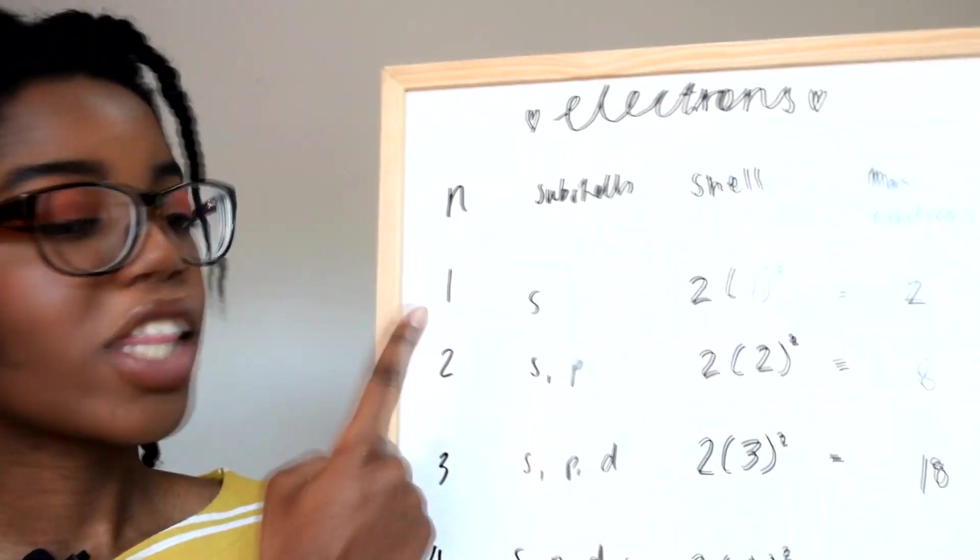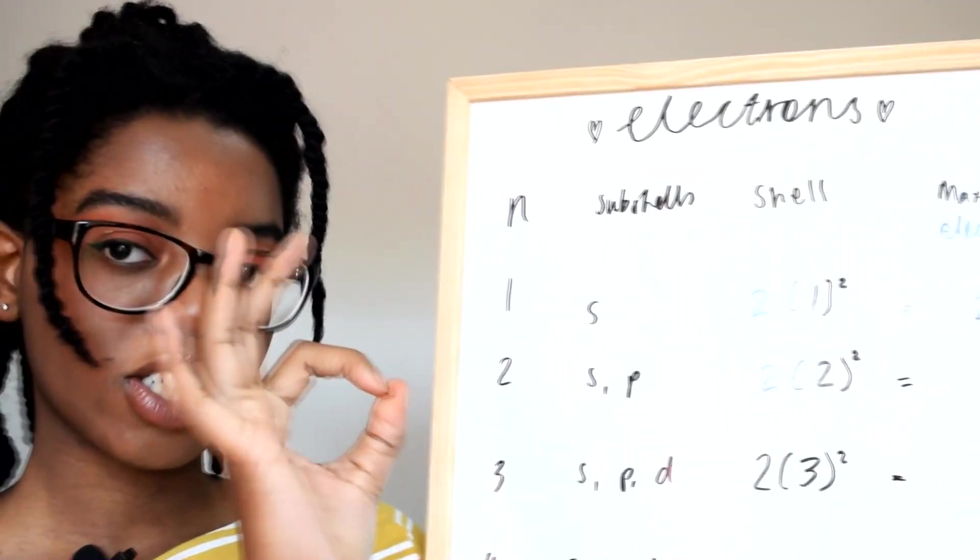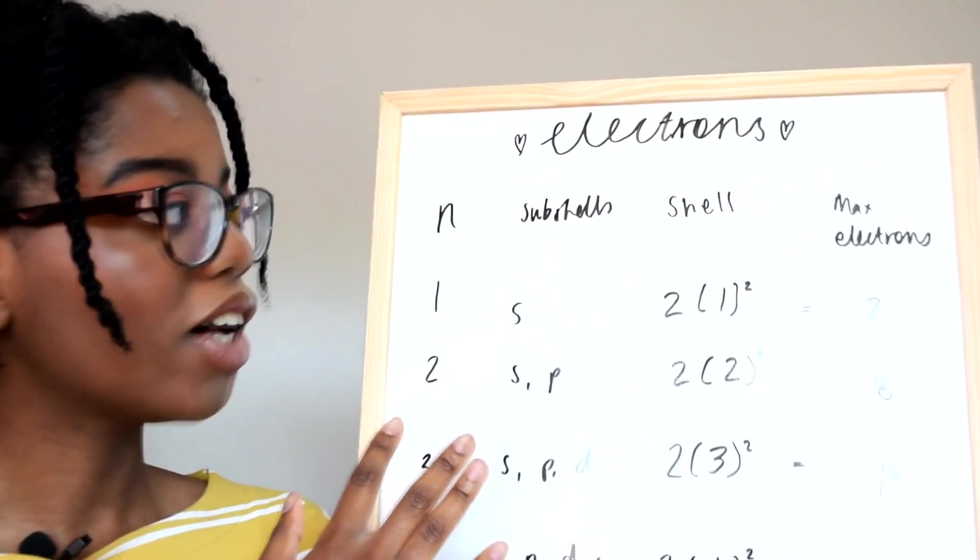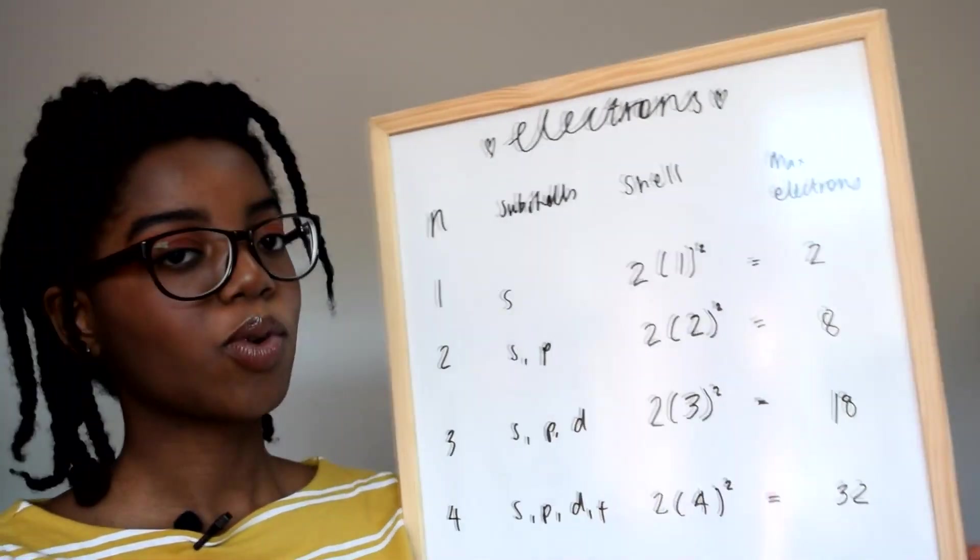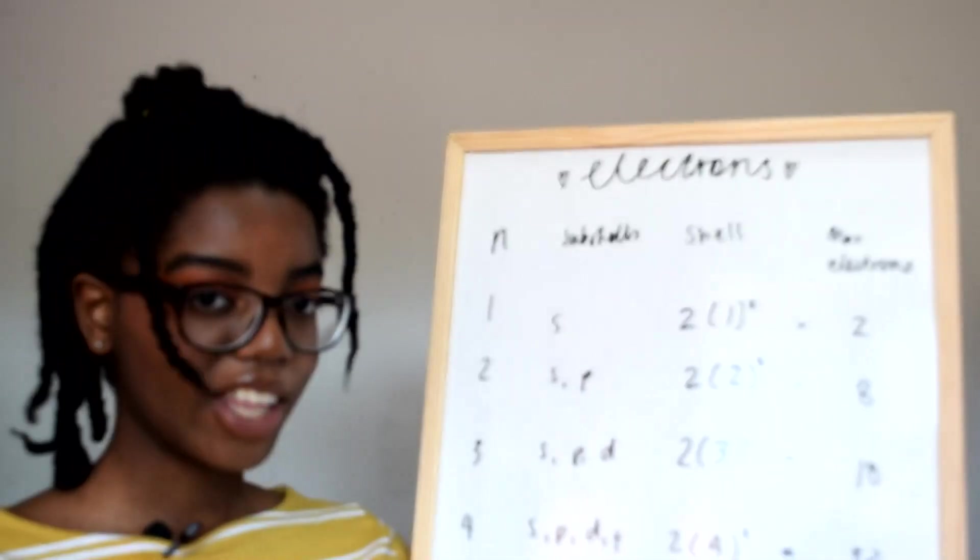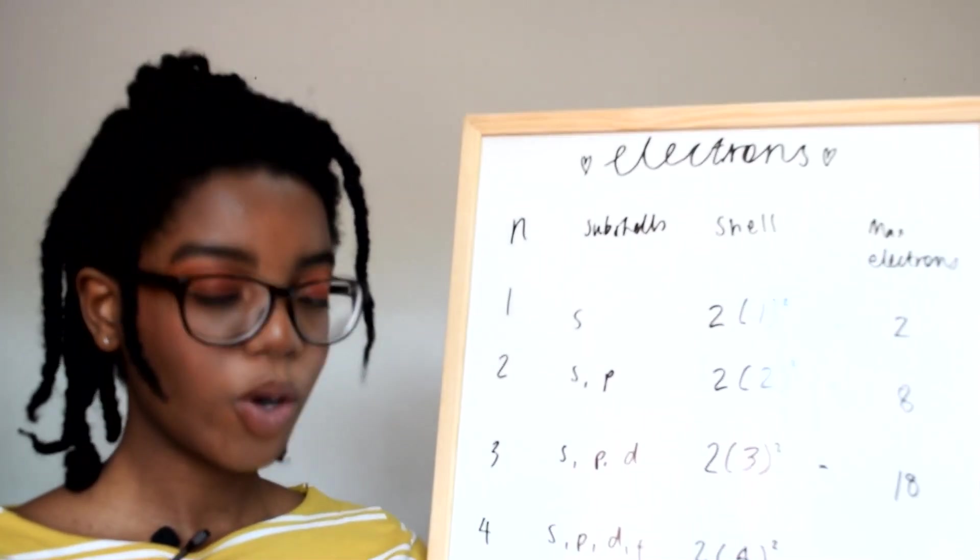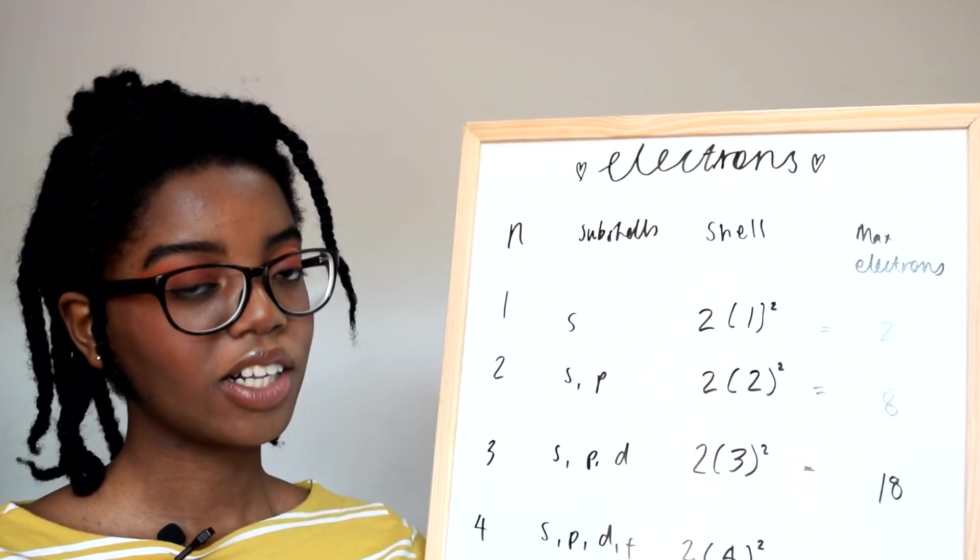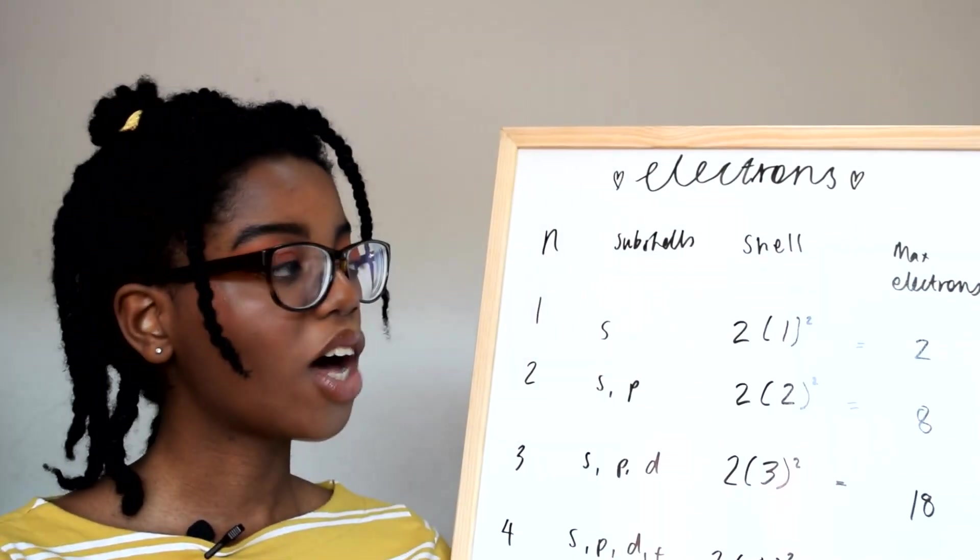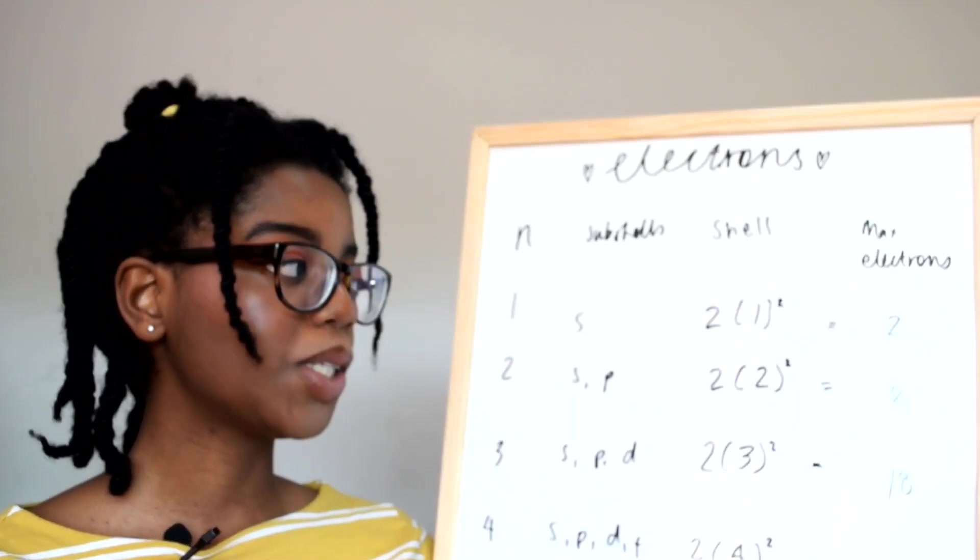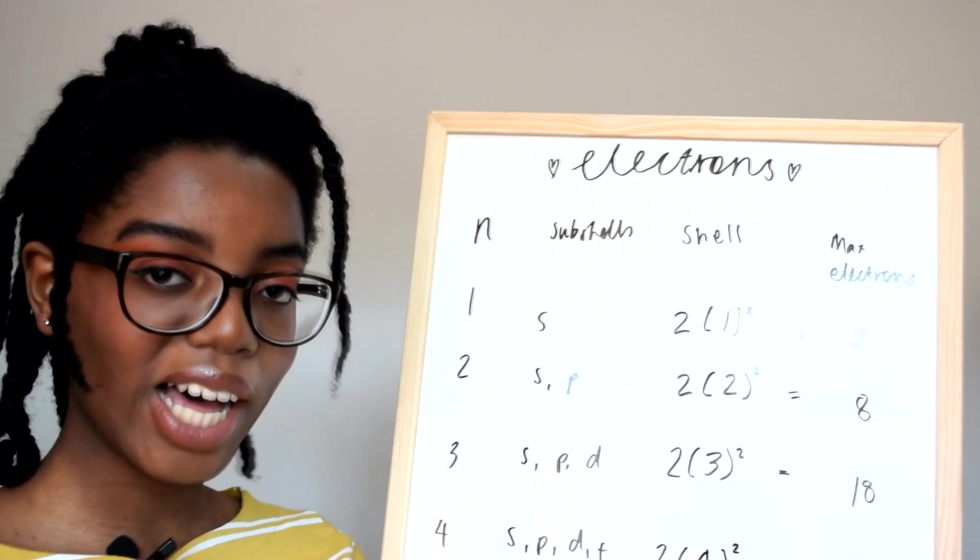With one electron shell you would just have S subshell. So with one principal quantum number, you would have only the S subshell which would have a maximum of two electrons from doing 2 times 1 squared.